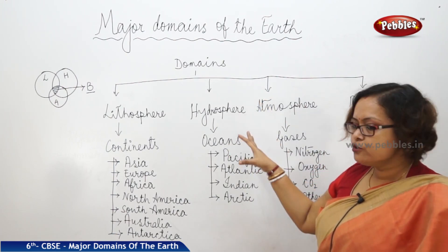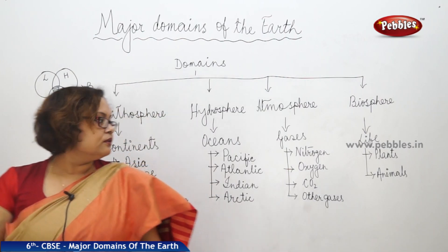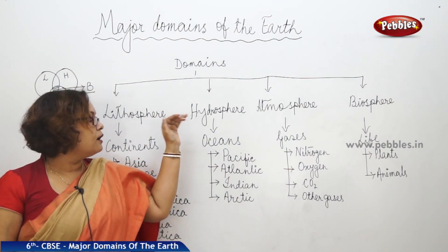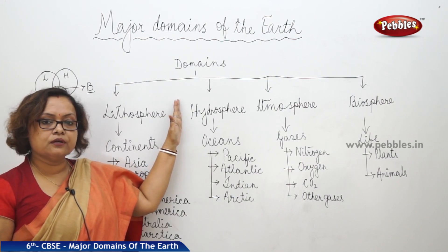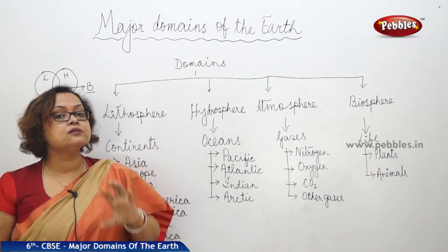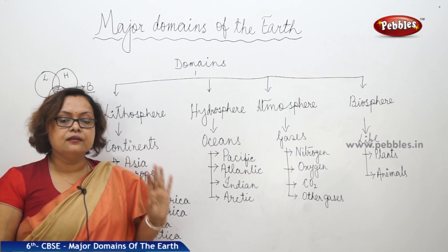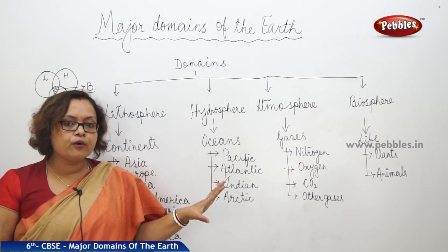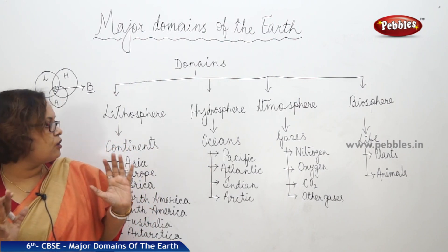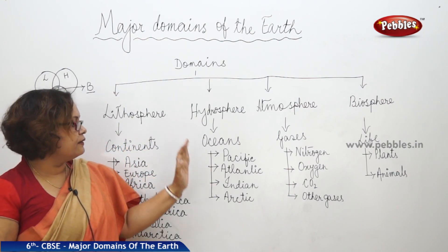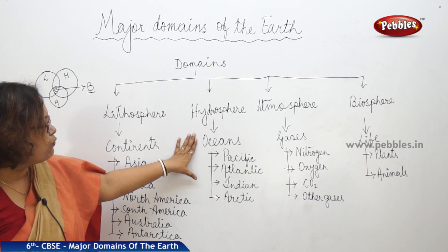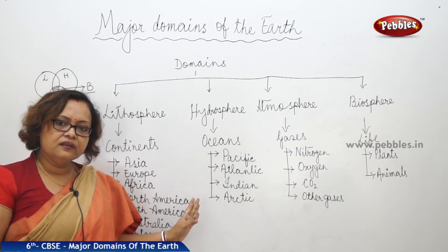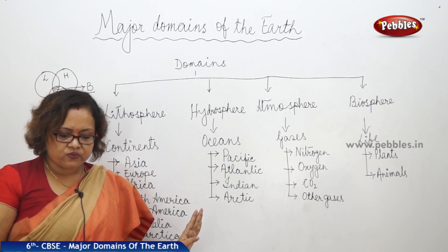Next we come to the hydrosphere, which is mostly made up of all the oceans and water bodies of the earth. The major part of the hydrosphere, setting aside rivers, lakes, and small water bodies, is made by the oceans. We have four oceans: the Pacific Ocean, Atlantic Ocean, Indian Ocean, and Arctic Ocean.